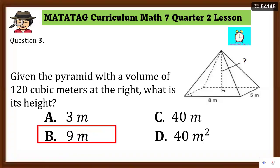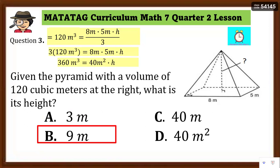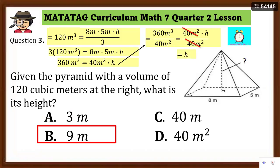Assessment Question 3: The answer is letter B — 9 meters. Given a pyramid with volume of 120 cubic meters, length = 8 meters, width = 5 meters, find the height. Substitute into the formula: 120 = (8 × 5 × h) / 3. Cross-multiply: 3 × 120 = 360 cubic meters = 8 × 5 × h = 40 square meters × h. Divide both sides by 40 square meters: h = 360 ÷ 40 = 9 meters.